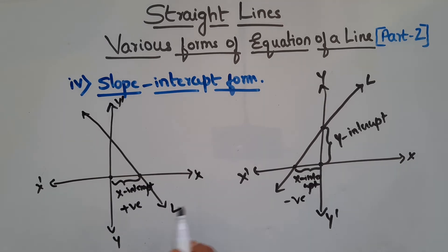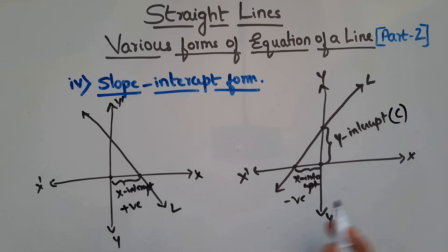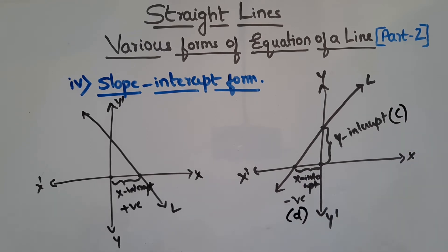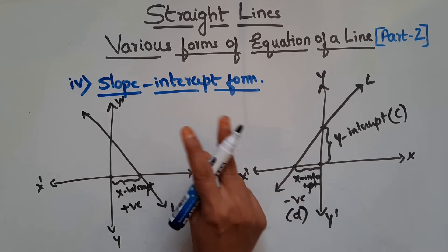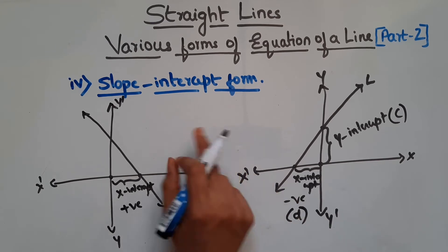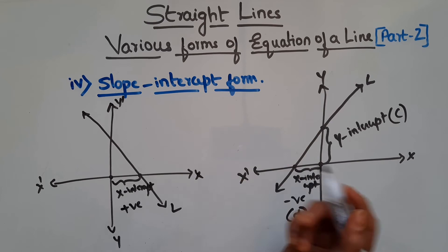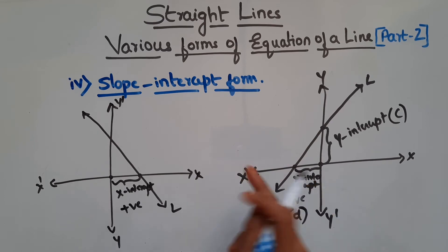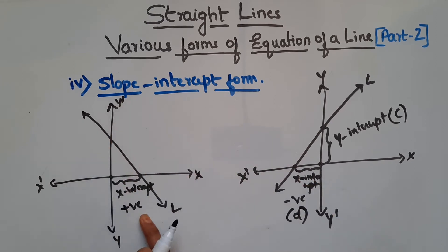In general, y-intercept is represented by c, and the x-intercept is represented by small d. So here we have two cases: when slope and y-intercept of a line is given, then how to find the equation of a line? And one more: when slope and x-intercept is given, then how to find the equation of a line?